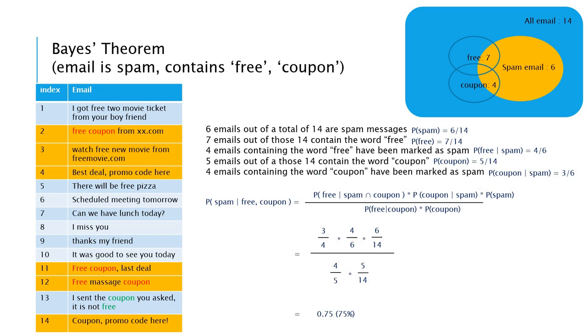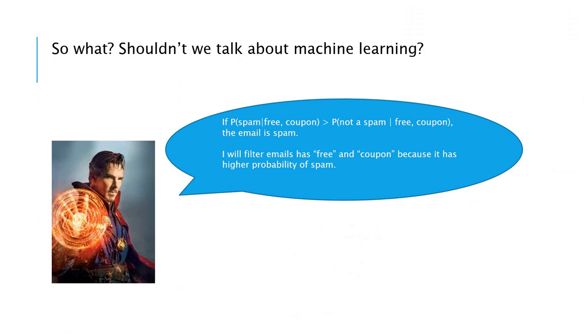And after the calculation, we can know that when the email has the word free and coupon together, the probability of spam email is 75%. So if we use the machine learning here, then the machine learning is going to say that this email has a probability, 75 probability of spam email. So we are going to move this email to your spam.